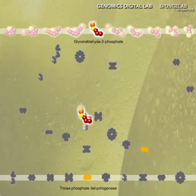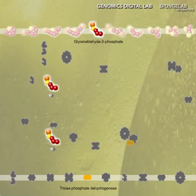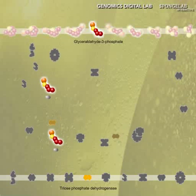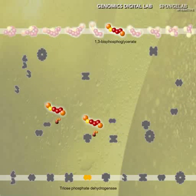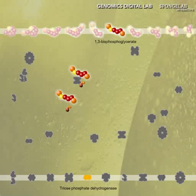Through a stepwise series of intermediate reactions, glycolysis converts sugar to pyruvate.